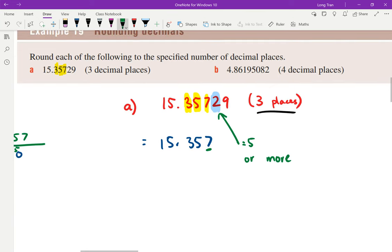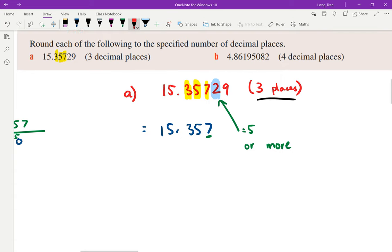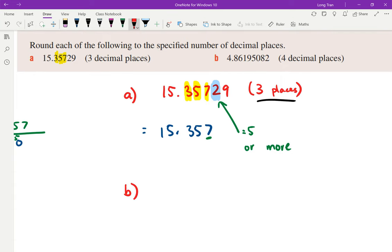Let's do the next example. Here we go with part B: 4.86195082.